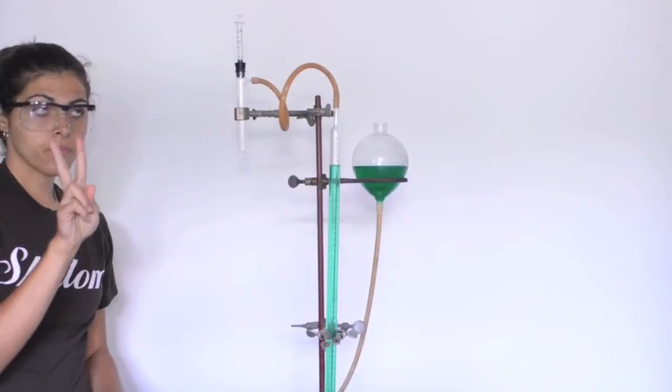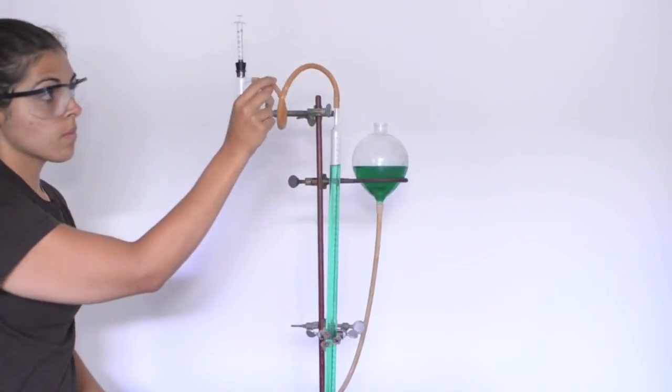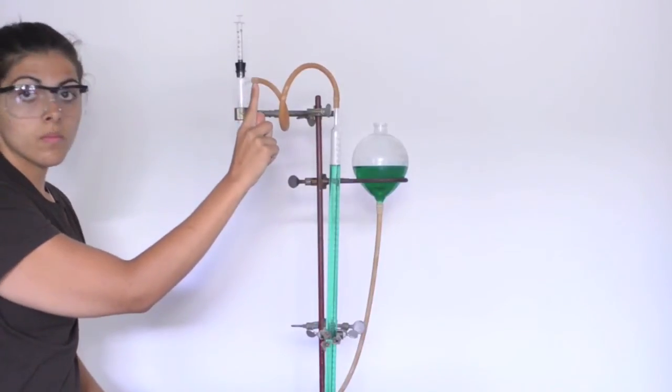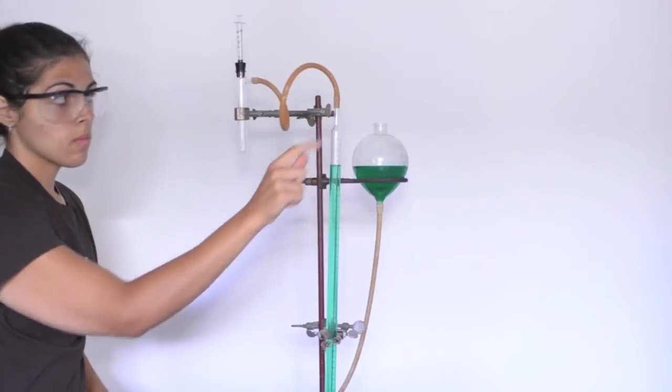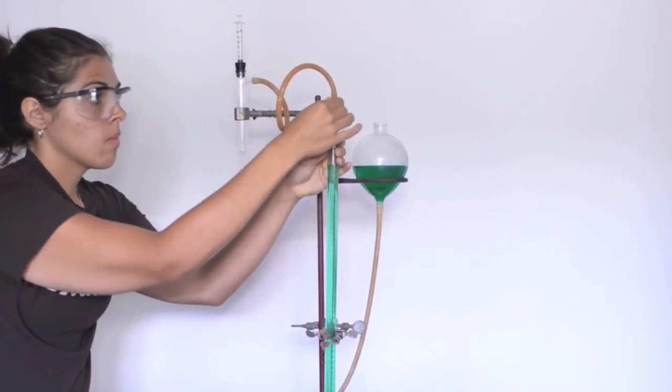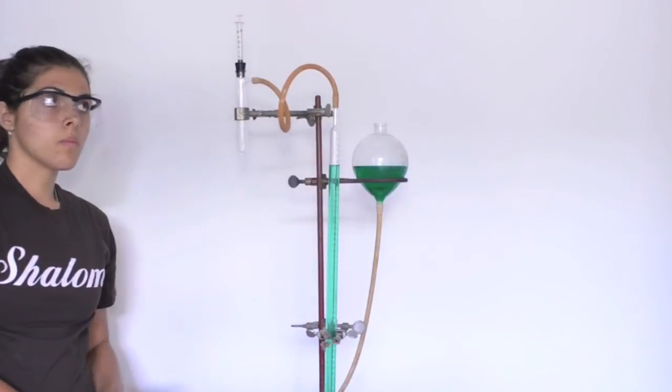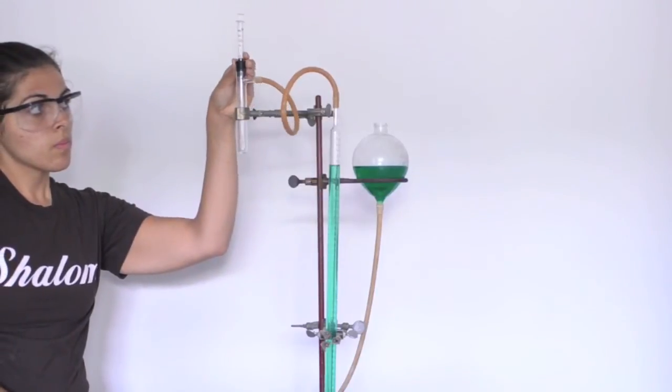There are two major types of leaks. The first is a tubing glass connection problem either at the sidearm test tube or at the gas burette. These are fixed by tightening up the tubing at these connections. The second major place that you will get a leak is at the syringe-stopper connection.